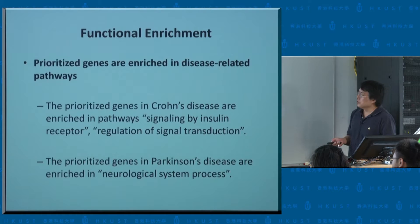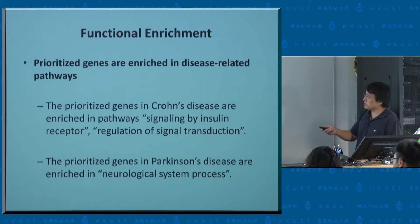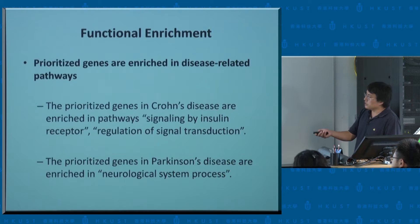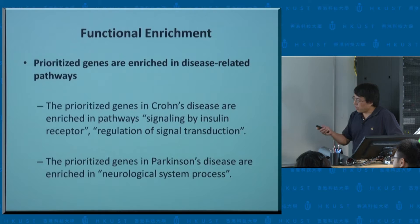We have these ranked genes based on the prioritized approach. We can look at the top 100 or top 50 to see if there's evidence these genes are enriched in certain gene ontology terms — similar biological functions. For Crohn's disease, the top genes are enriched in insulin receptor signaling transduction, suggesting immune-related response. For Parkinson's disease, the prioritized genes are enriched in neurological system processes. So there seems to be merit both in terms of replication rates and in bioinformatics-based annotations of the prioritized genes.